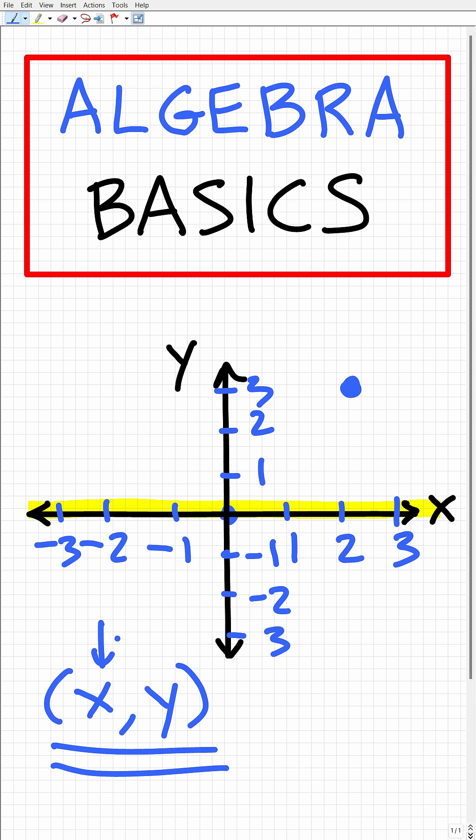We're going to locate this point first on the x-axis. If you look down here, this point appears to be about two on the x-axis. We're going to write that coordinate first. That would be the coordinate two.